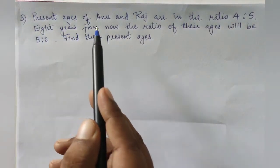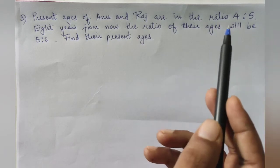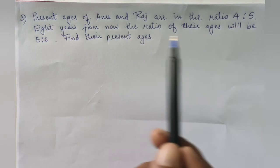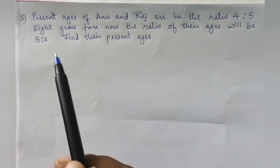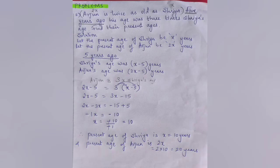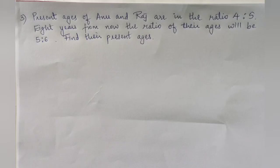Let us now solve another age problem. The present ages of Anu and Raj are in the ratio 4:5. Eight years from now the ratio of their ages will be 5:6. Find their present ages. This problem is slightly different — earlier the ages were directly compared, but here the ages are given in ratio.